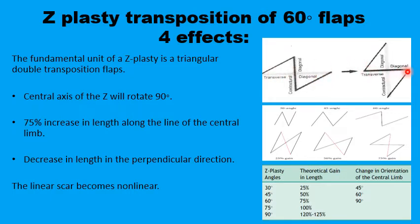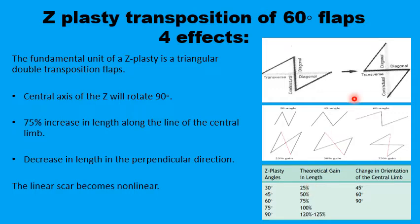The shape of the wound changes from a linear scar to a Z configuration. The percentage increase in length depends on the apex angle: 30 degrees gives 25% increase, 45 degrees gives 50%, 60 degrees gives 75%, and 75 degrees gives 100% increase. However, as the angle increases above 60 degrees, transposing the flaps becomes progressively more difficult.